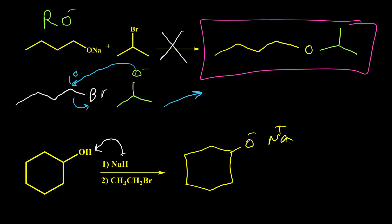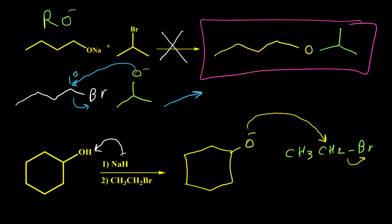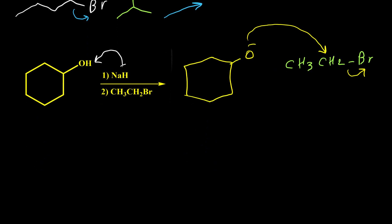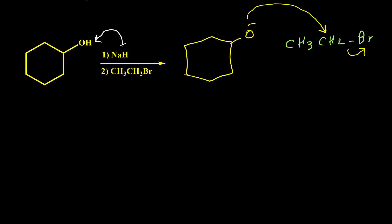We then have the reaction between this alkoxide anion and ethyl bromide (CH3CH2Br). The oxygen easily attacks and expels the bromide, and here is our ether product.